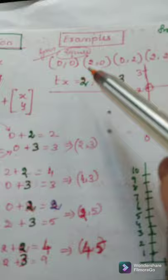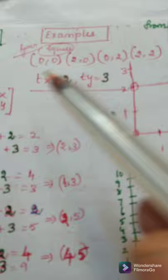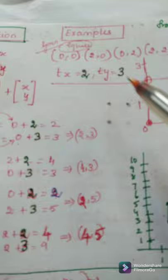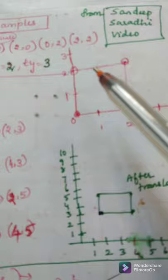For example, let us consider these points 0, 0, 2, 0, 0, 2, 2, 2. And the given translation vector TX equal to 2 and TY equal to 3. By using these coordinates, we can plot this thing. We will get the original figure like this.